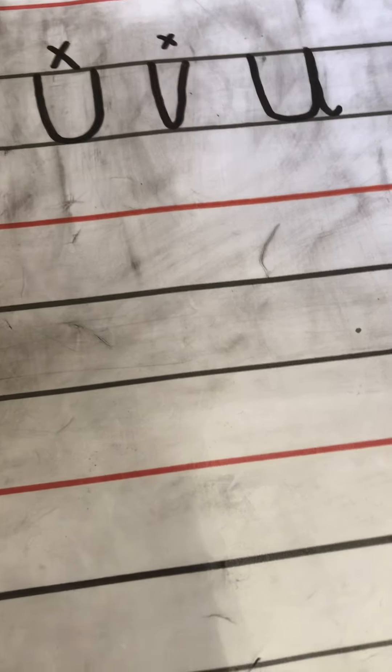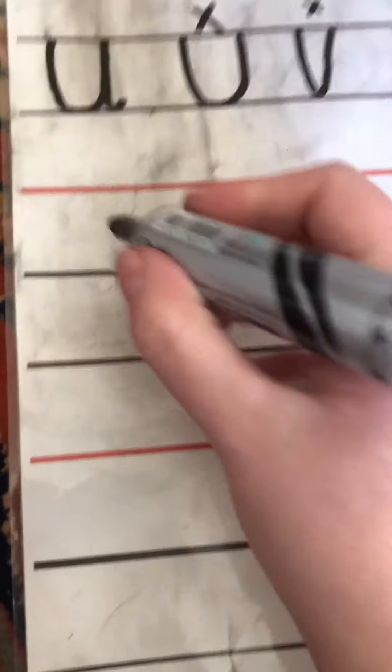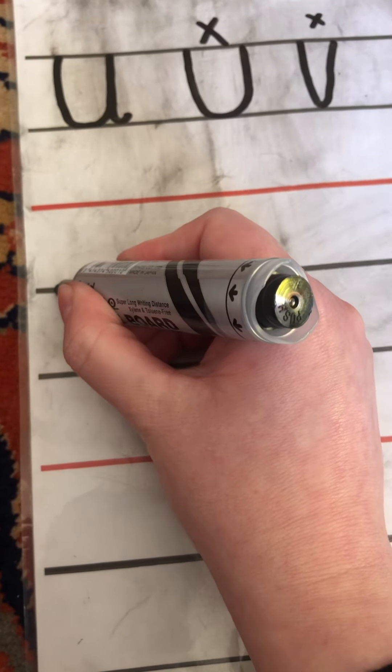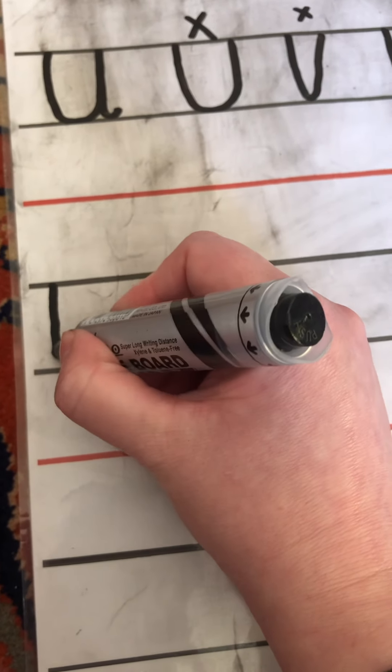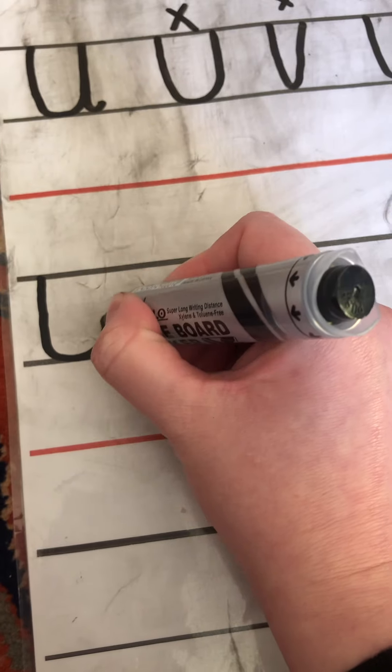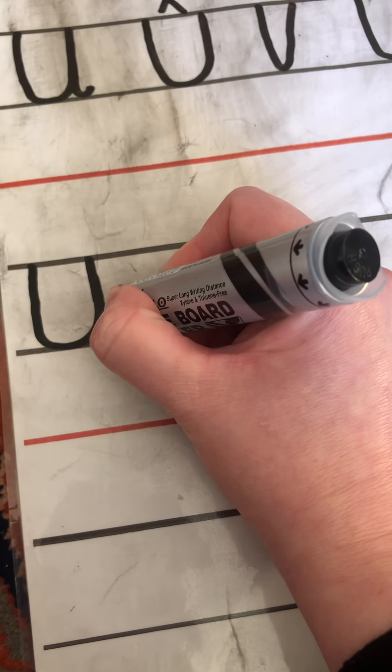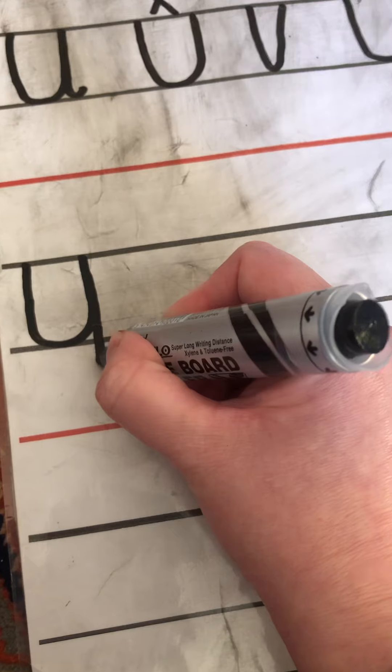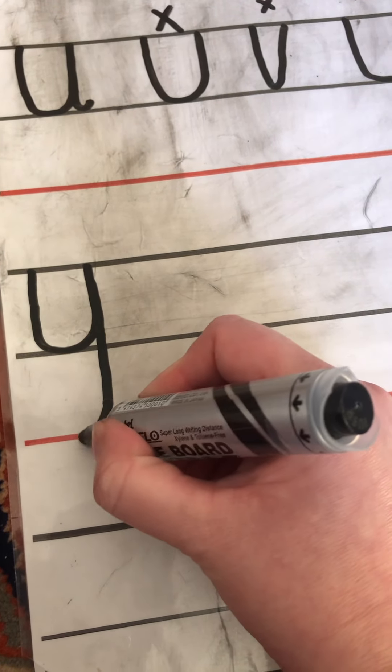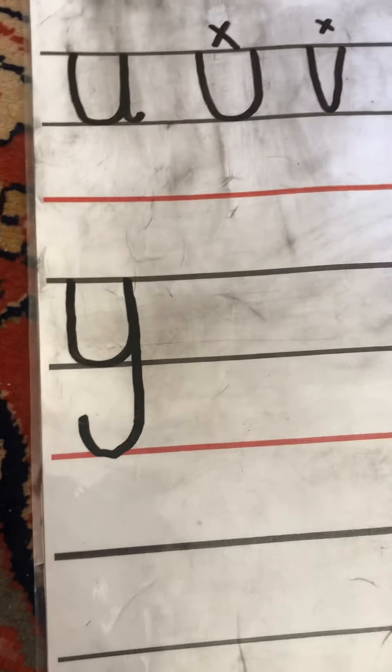And the letter Y is pretty similar. There's just one difference. So it starts at the top just like U. And you go down the yak's face, up the yak's face, back down. But instead of flicking, you carry on down to the red line and you curl round the yak's tail.